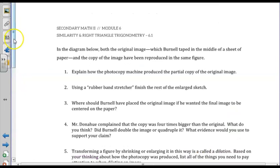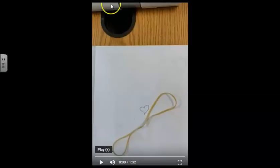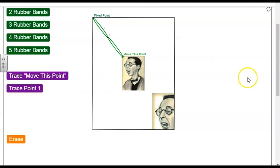So on the next page, we're asked to look at the diagram below, and the first question tells us to explain how the photocopy machine produced the partial copy of the original image. So in class, we did use the rubber band sketchers. We each had them. But we also did take a look at a GeoGebra example of this portrait. So as you can see, this is a digital image of my rubber band. So here's my fixed point. Here's where I'm going to trace. And here's my end point.